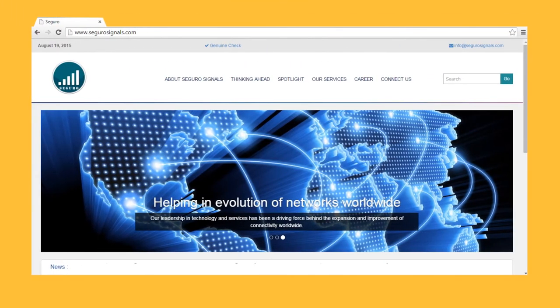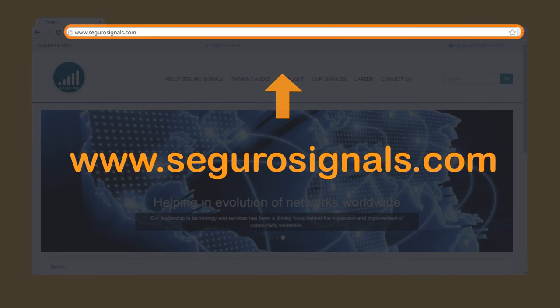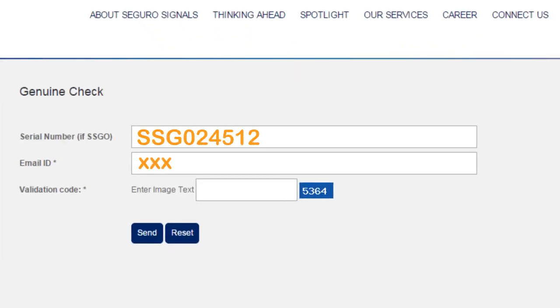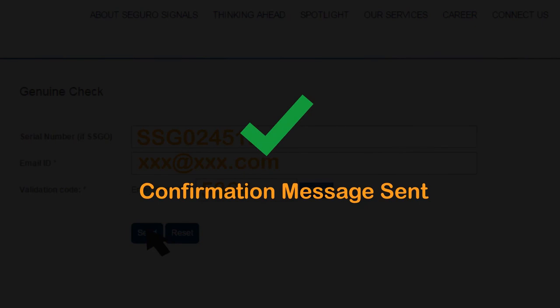Also, to double check, log on to our website www.segurosignals.com and go to tab Genuine Check. Enter the serial number of the product and you will get the confirmation message whether the product is from Seguro or not.